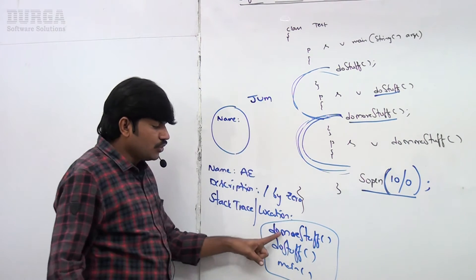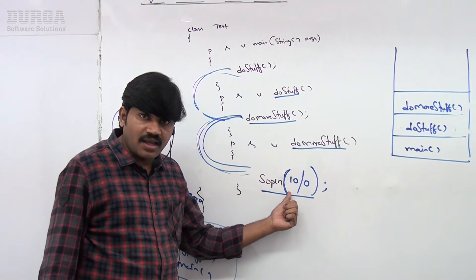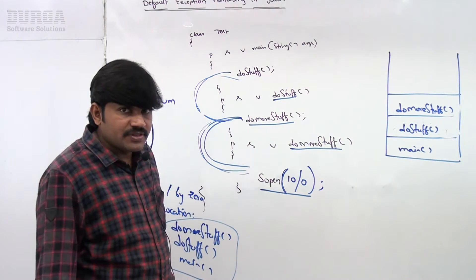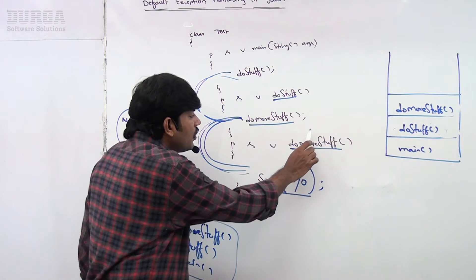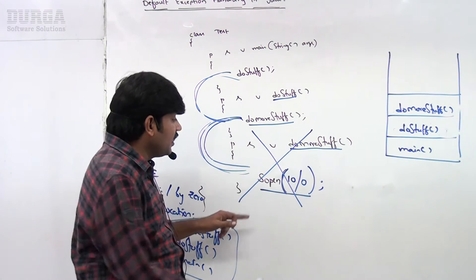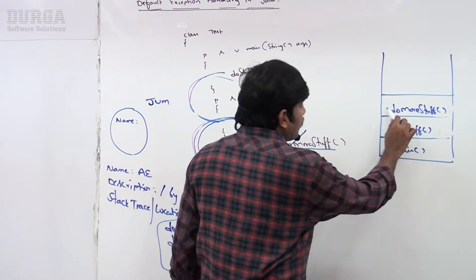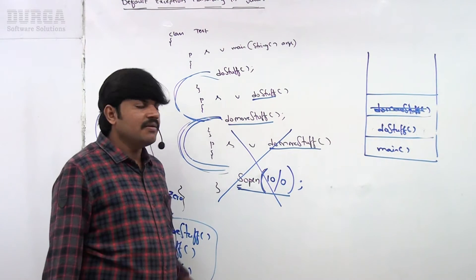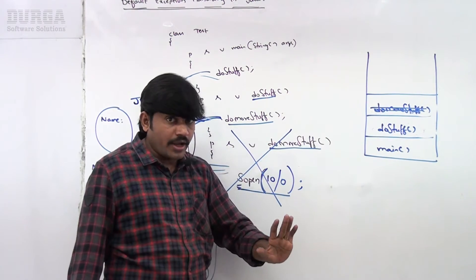JVM will ask: in which method did this problem come? It was doMoreStuff. JVM asks doMoreStuff: something went wrong in your area — do you have handling code? doMoreStuff says: no, I'm not having any handling code. If you are not having handling code, immediately JVM is going to terminate this method abnormally — without executing remaining code. JVM terminates this method abnormally and removes the corresponding entry from the stack.